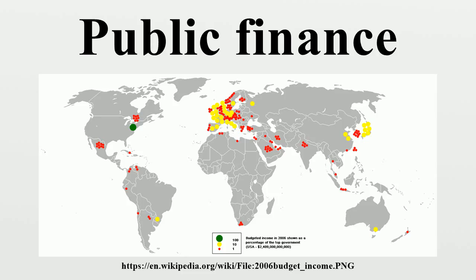Taxation is the central part of modern public finance. Its significance arises not only from the fact that it is by far the most important of all revenues, but also because of the gravity of the problems created by the present-day tax burden. The main objective of taxation is raising revenue. A high level of taxation is necessary in a welfare state to fulfill its obligations. Taxation is used as an instrument of attaining certain social objectives, as a means of redistribution of wealth and thereby reducing inequalities of income and wealth.